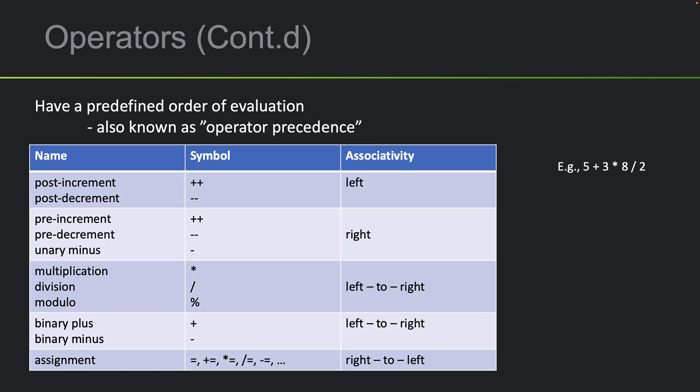Operators also have an order of evaluation. Thinking back to BEDMAS, in formal mathematics, operations like division and multiplication are always performed before addition and subtraction, regardless of their order in the expression, assuming no brackets. In our terms, multiplication and division have higher precedence than addition and subtraction. BEDMAS also tells us that multiplication and division have equal precedence, so what determines evaluation order is the order they appear in the expression.